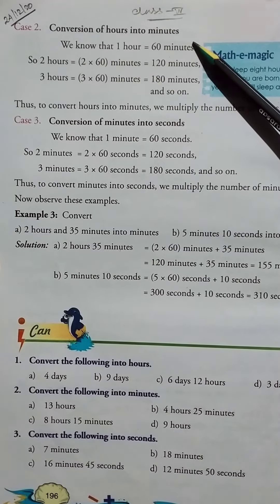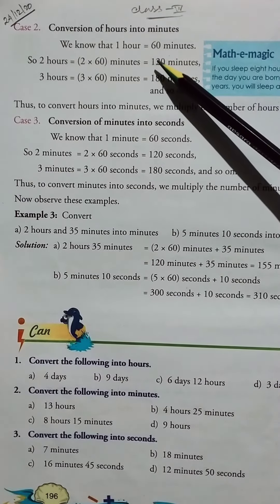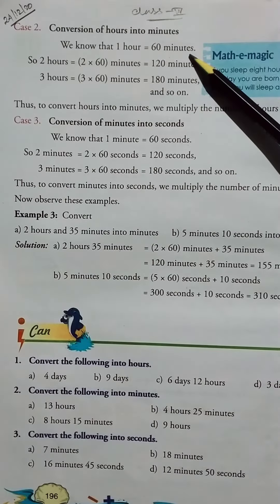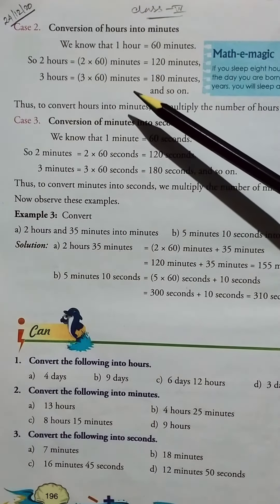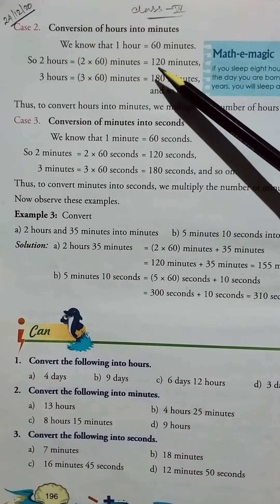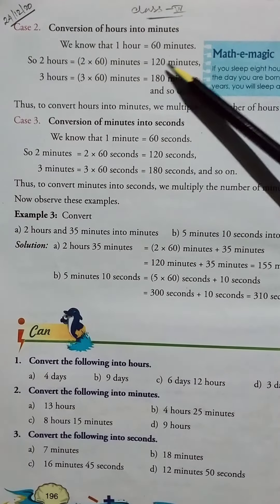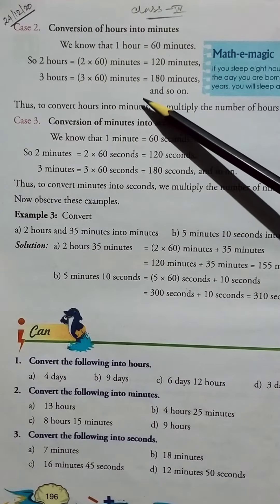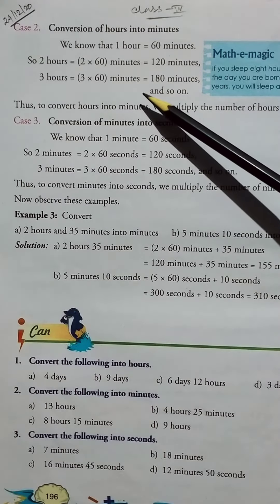We know that 1 hour equals 60 minutes. So 2 hours equals 2 into 60 minutes, which is 120 minutes. Then 3 hours equals 3 into 60 minutes, which equals 180 minutes, and so on.